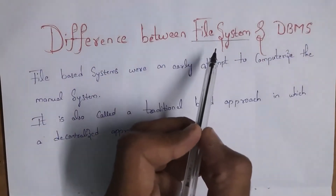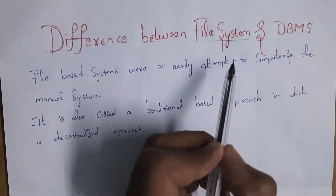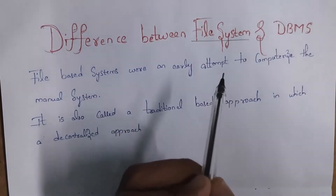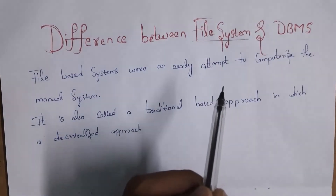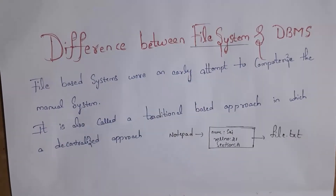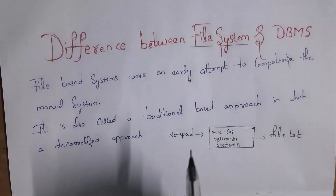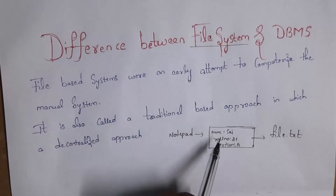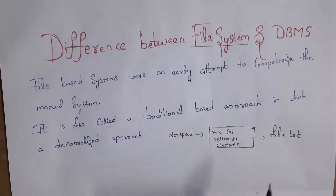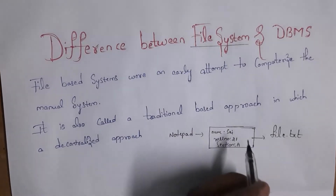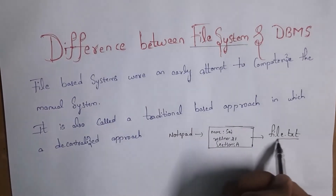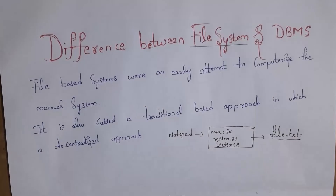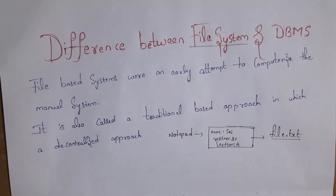File system is nothing but a text file. When the computer was first introduced, we used to store our data in text files. For example, I open Notepad on my computer and write some text like my name, roll number, section, and so on. I will save this file with the name file.txt — we save text files with the .txt extension.